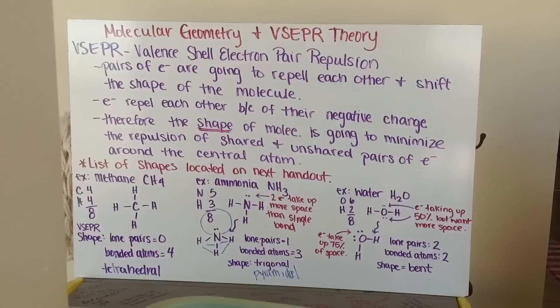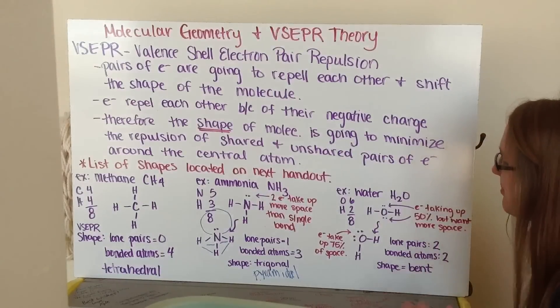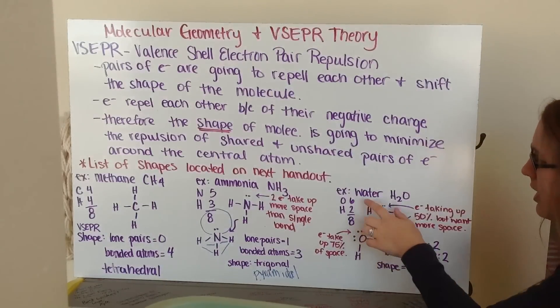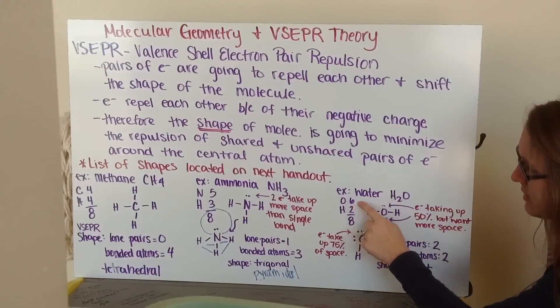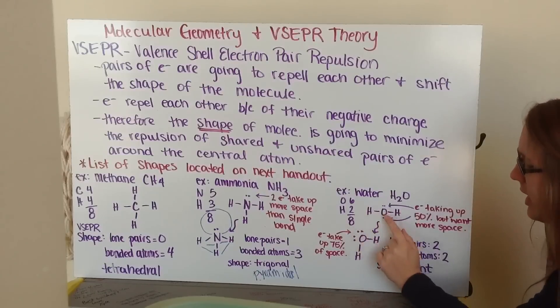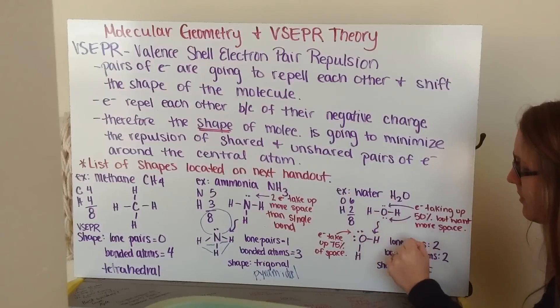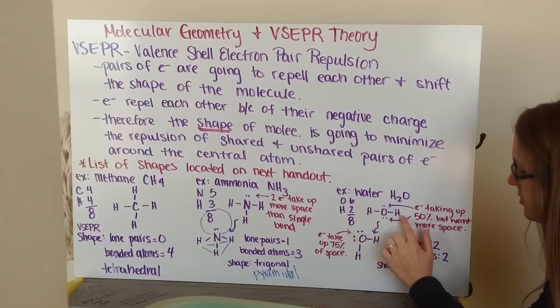My next example is water. This is your classic bent molecule, your classic polar bent molecule. Water is H2O, as you all know. Oxygens have six valence electrons, hydrogens have two valence electrons, total is eight. I go ahead and draw my skeleton and fill in everybody's octet. Hydrogen just wants two, oxygen has its eight, hydrogen wants two, and then I have two lone pairs of electrons here and here.